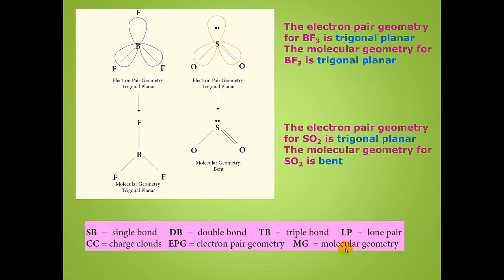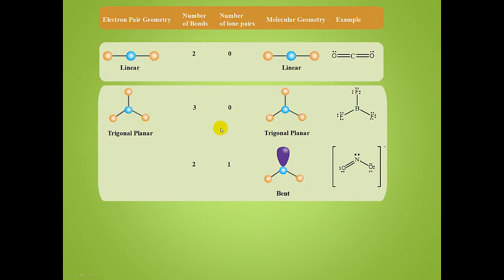Here are a few abbreviations we'll be using during this video and in class — you can look at these in your book. Here's a table showing how we determine electron pair geometries and molecular geometries. When we have a central atom surrounded by two atoms, we have a linear geometry. The charge clouds orient themselves as far away from one another as possible, so the angle must be 180 degrees. The electron pair geometry is linear, and since there are no lone pairs about the central atom, the molecular geometry is also linear.